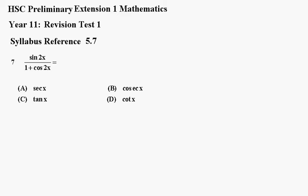So what we'll do is change all that to single x in the numerator and denominator. So if we call it sine 2x, that is 2 sine x cos x.